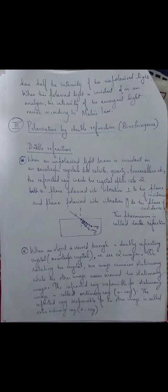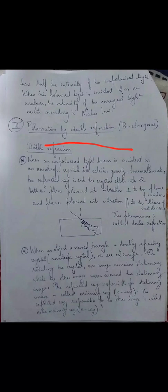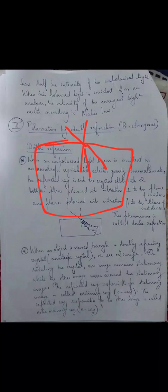Double refraction is also called birefringence. When ordinary unpolarized light is passed through certain crystals like quartz, calcite, etc., the refracted ray inside the crystal splits into two. Even when a light ray passes through a glass plate it will have just one refracted ray, but when a ray of light passes through a doubly refracting crystal there will be two refracted rays. This phenomenon is called double refraction.